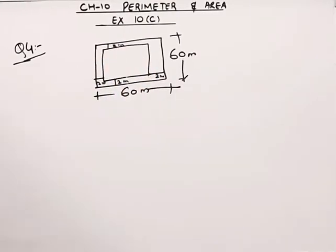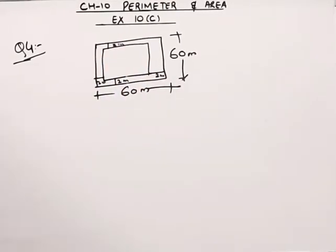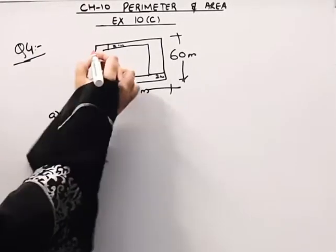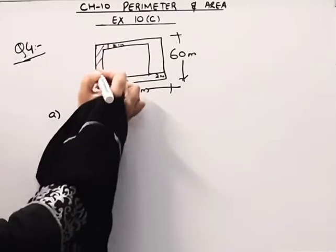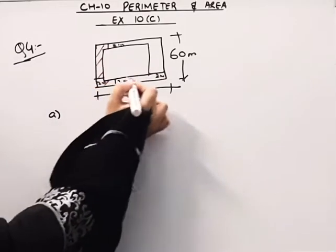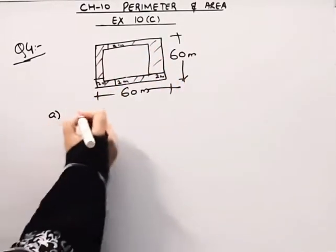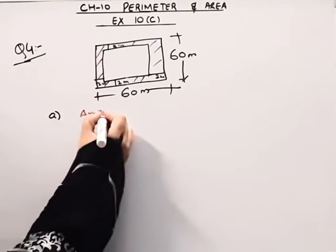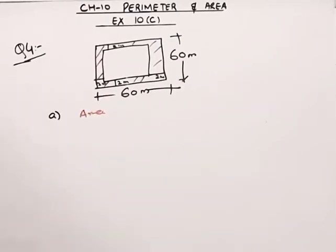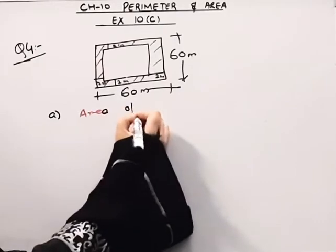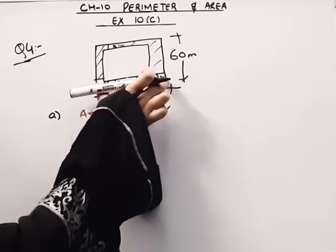The first question is, we have to find the area of the path. All the problems in this exercise are based on the same concept. So what we can do here is, find out the area of the square.